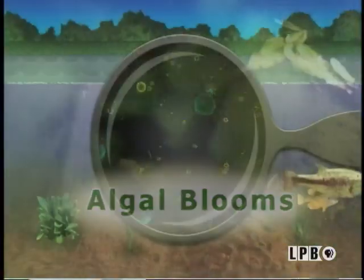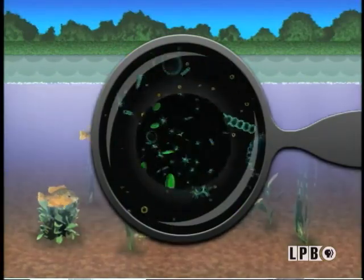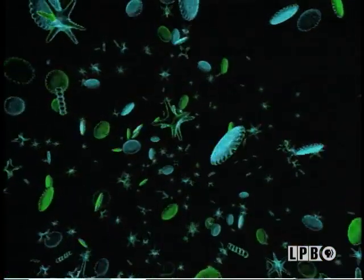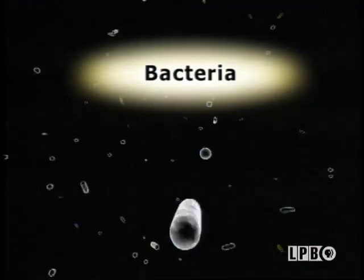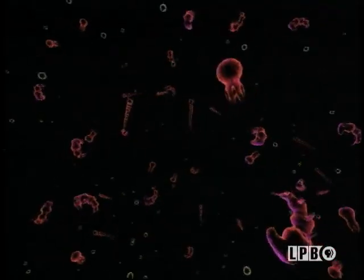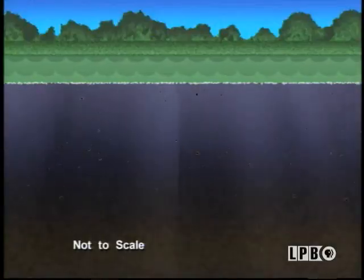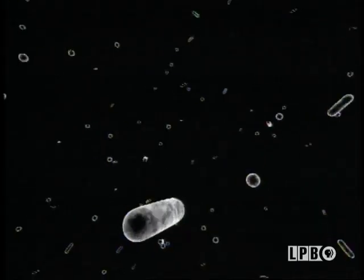Even though phytoplankton can undergo rapid growth — algal blooms, as it's called — they have very short lifespans of just a few hours. After the phytoplankton die, they drop to the bottom of the ocean or lake and are decomposed by armies of bacteria, which quickly consume oxygen in the water. The zooplankton, or tiny animals, also drop waste called fecal pellets, which fall to the bottom of the lake, ocean, or river, and that is also decomposed, using up more precious oxygen.